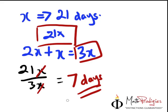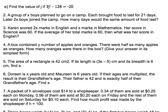So the answer is 7 days. If you got that one right, high five to you because you are a math prodigy. Good job. So let me squeeze in another question here, which is question number 3. We're going to do this very fast. Karen scored 2x marks in English and x marks in mathematics. Her score in science was 60. If the average of her total marks is 60, then what is her score in English?